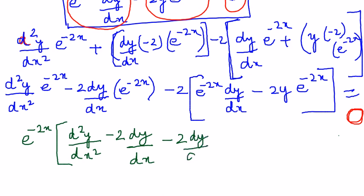e power minus 2x into d squared y by dx squared minus 2 dy by dx minus 2 dy by dx, I am just expanding it. Anyone can do it faster. Plus 4y equals 0.